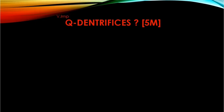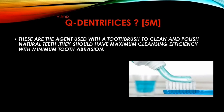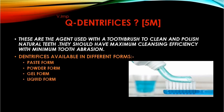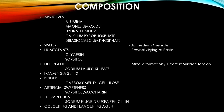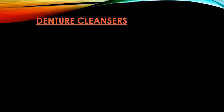Dentifrices, commonly called toothpaste, is a very important topic. These are agents used with a toothbrush to clean and polish natural teeth. They should have maximum cleansing efficiency with minimum tooth abrasion. Available in different forms like paste, powder, gel, or liquid. They contain abrasives, water as a vehicle, humectants which protect the paste from drying, detergents to decrease surface tension, foaming agents, binders, artificial sweeteners for pleasant taste, and coloring and flavoring agents such as mint. Some also contain therapeutic agents such as sodium fluoride for its anti-cariogenic property.